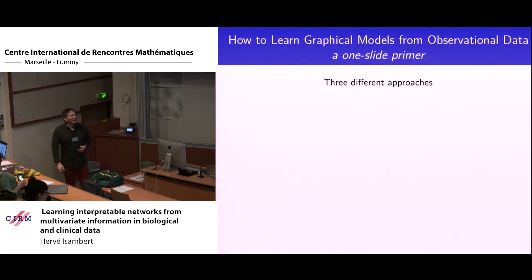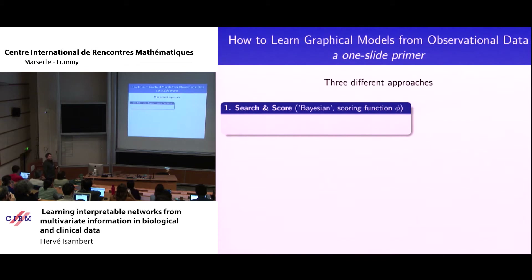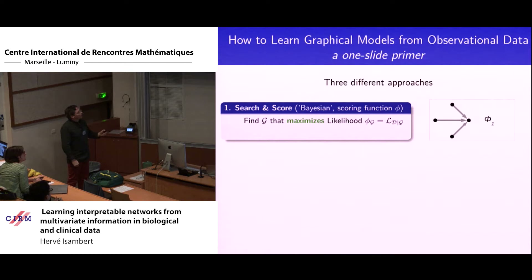Since this is a school, let's give some background — it all fits on one slide. How to learn graphical models from observational data. I'll describe three main approaches. The first is search-and-score methods, typically for Bayesian graphs. The idea is to maximize some score called the likelihood. You can compute this score for any graph: given the data, you start with some random graph, estimate the score, then change the graph by flipping, adding, or removing an edge, and recompute the score.